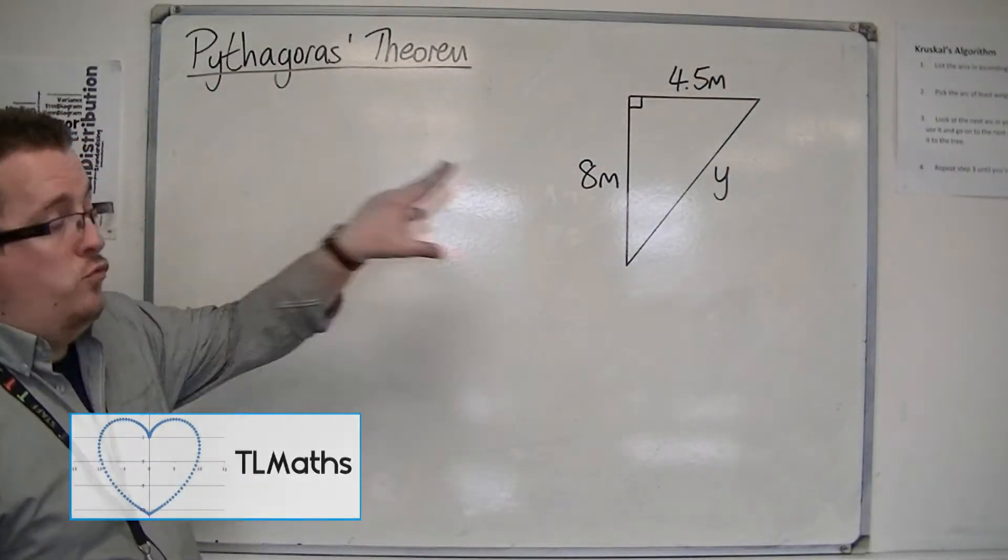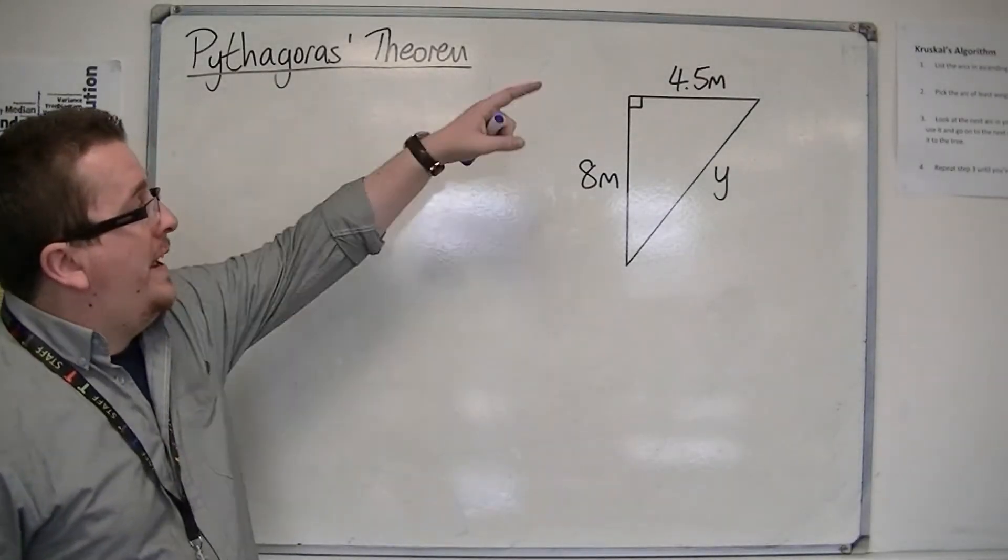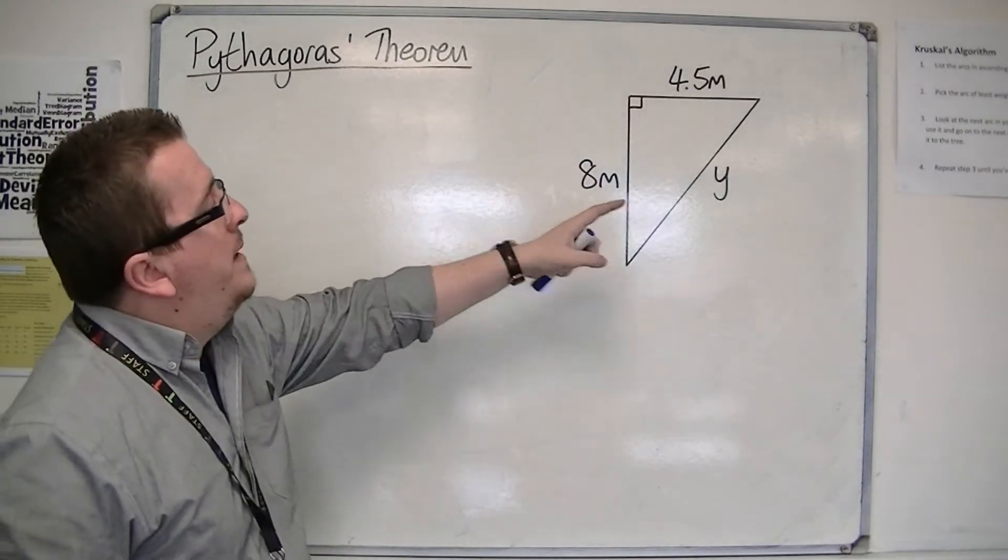Okay, so we have a right-angled triangle. We've got lengths of 4.5 metres, 8 metres, and y.